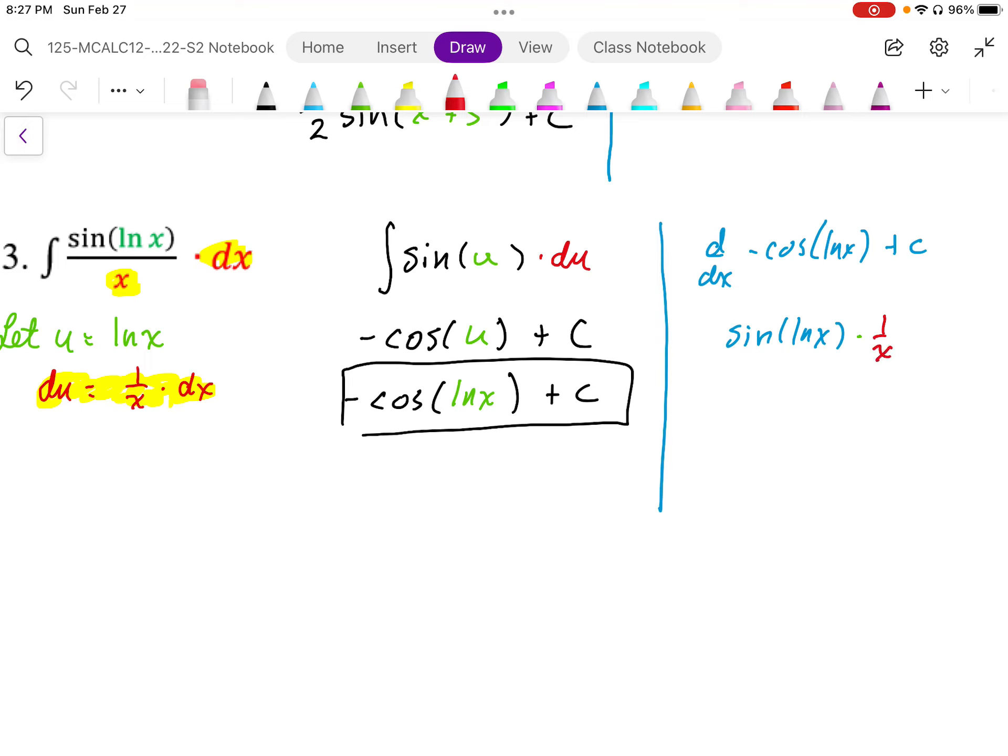So we end up with the original expression that I started with. So since we differentiated this into the original function, the anti-derivative of that sine ln x over x dx must be negative cosine ln x.